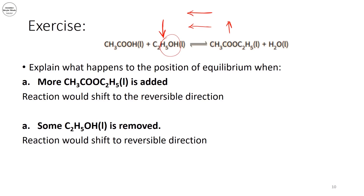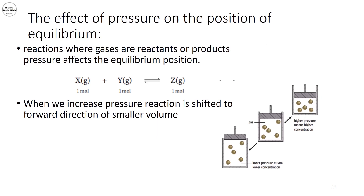Now let's look at how pressure affects equilibrium. Consider a reaction where two moles of gaseous reactants form one mole of product. If I increase the pressure, this shifts the reaction toward smaller volume, which is the side with fewer moles — the forward direction. If I decrease the pressure, there is more space, so the reaction shifts toward the larger number of moles — the reverse direction. Remember: pressure is inversely proportional to volume, so increasing pressure decreases volume and vice versa.